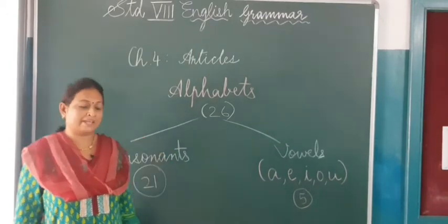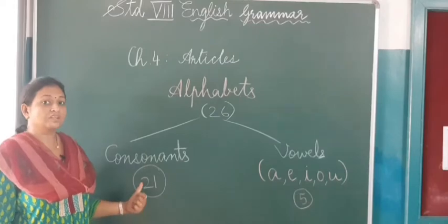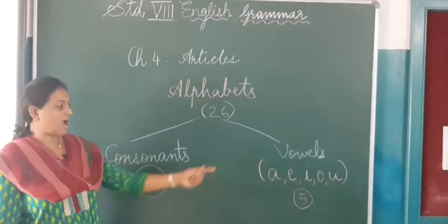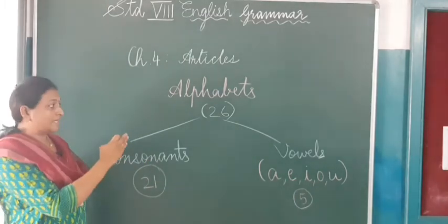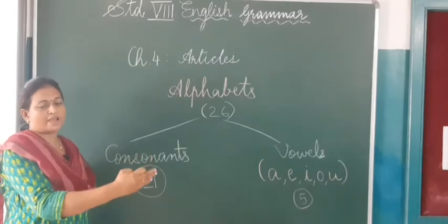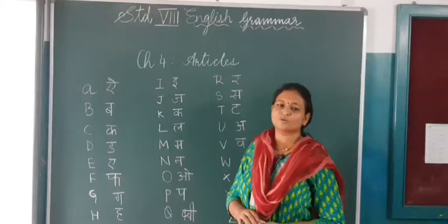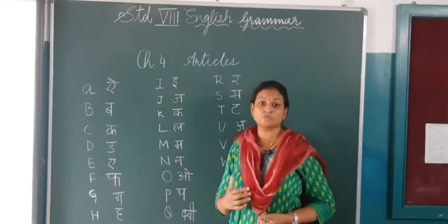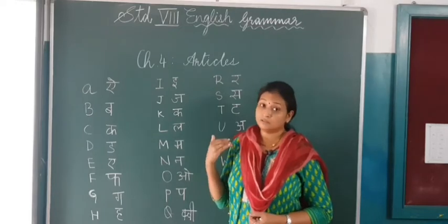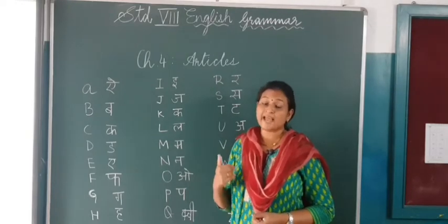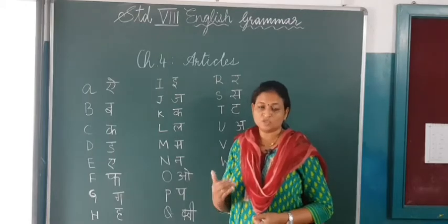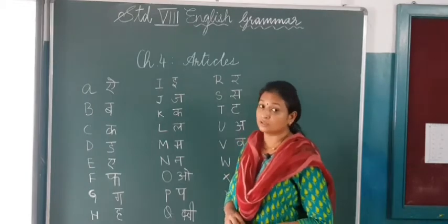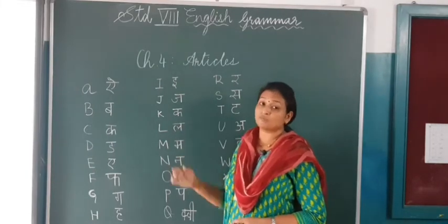A is a vowel, B is a consonant, C, D — E is there, F, G, H — I is there, and so on. 26 is divided into 21 consonants and 5 vowels. I am not going to teach you A, B, C, D — but we will be learning how to pronounce these alphabets. Because articles, especially 'an', are based on sound. So when you have that particular sound, you will be writing 'an'. For that, you need to learn the sound of these alphabets. For easy understanding, I have written it in Hindi also, so you can relate better.